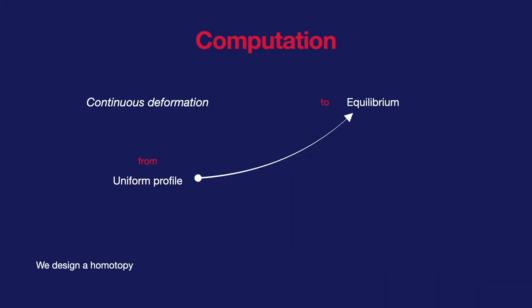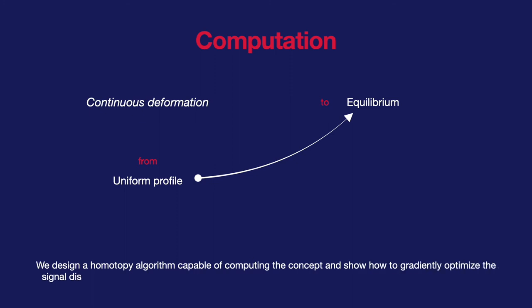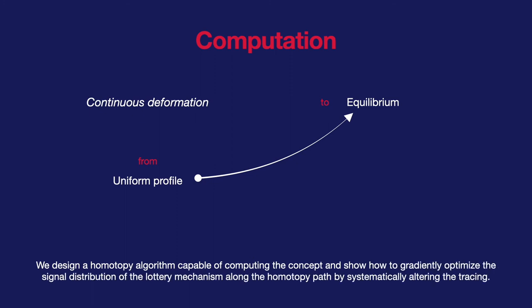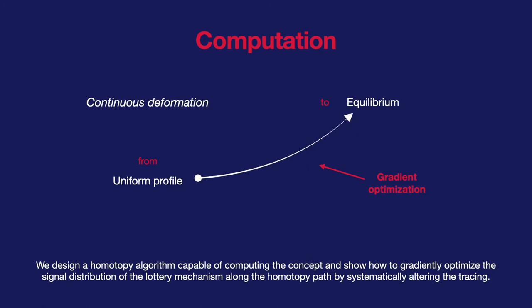In the second part of our paper, we design a homotopy algorithm capable of computing the concept and show how to gradually optimize the signal distribution of the lottery mechanism along the homotopy path by systematically altering the tracing.